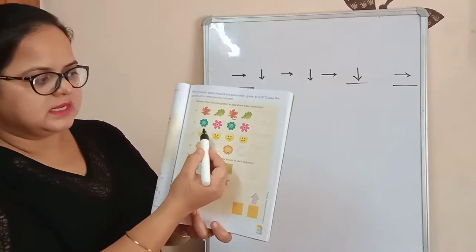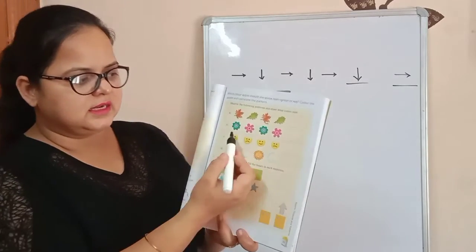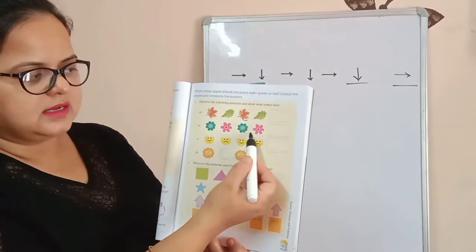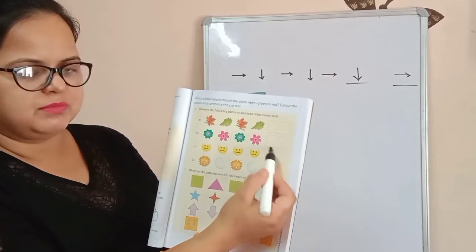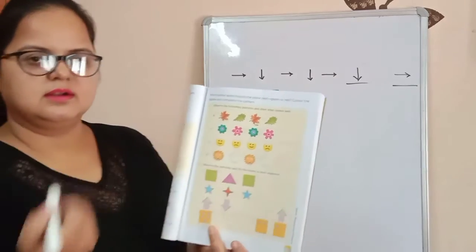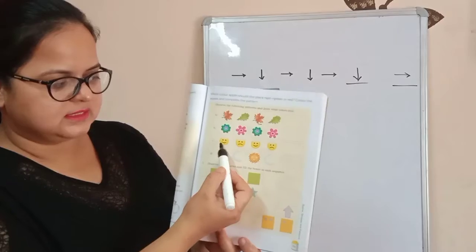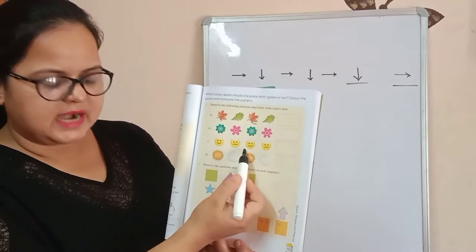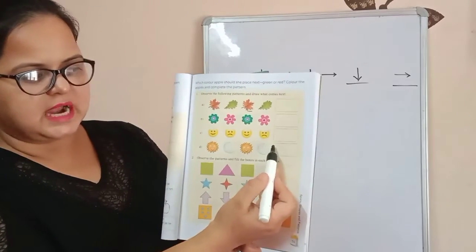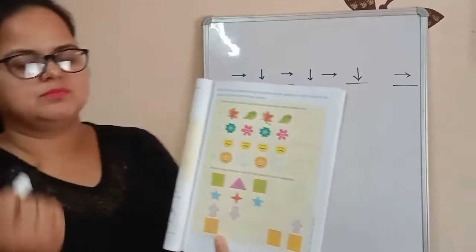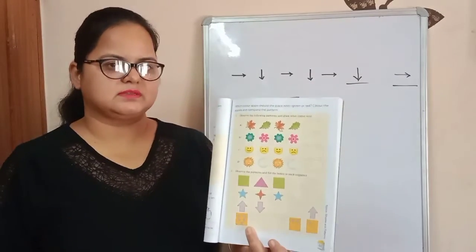The next one is the flowers again. Green, pink, green, pink. And here you have to make this green flower. The next one is, see, happy face, sad face, happy face, sad face. Again here you have to make a happy face.